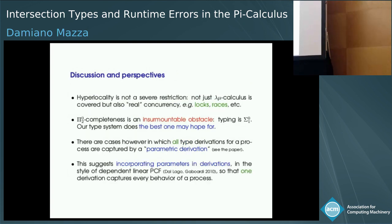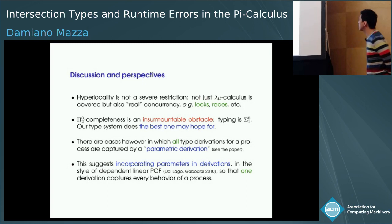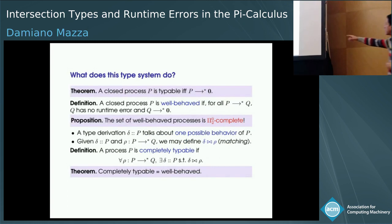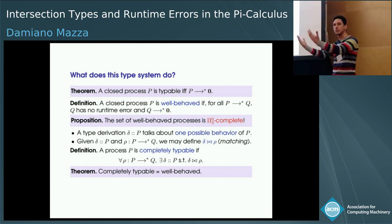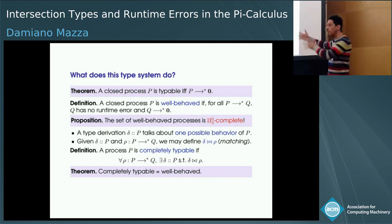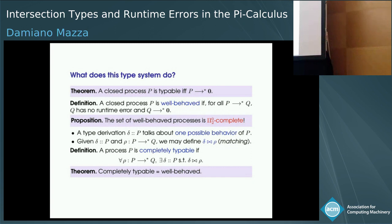If something escapes the type system, it's because that something is a bad behavior — something that shouldn't be typed. There is a theoretical obstacle: the property is pi-zero-two complete, so of course you can never hope to do better. And you see that complete typability is itself for-all-exists, which is pi-zero-two, so you cannot hope for anything different — if something characterizes good behavior, then it must be for-all-exists. That's really the best one can do.